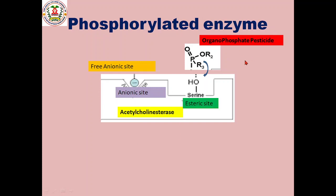Now we will see how organophosphate pesticides irreversibly block the cholinesterase enzyme. Not only organophosphate pesticides, but even other organophosphate compounds like nerve gases such as soman and sarin have this phosphorus atom. This phosphate group forms a complex with the esteric site of acetylcholinesterase, causing the enzyme to become totally phosphorylated — forming a phosphorylated acetylcholinesterase complex.